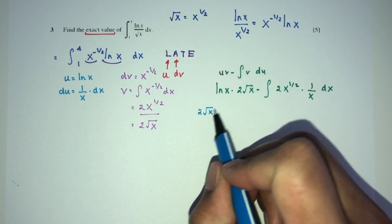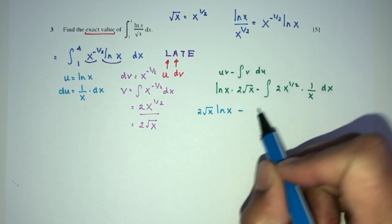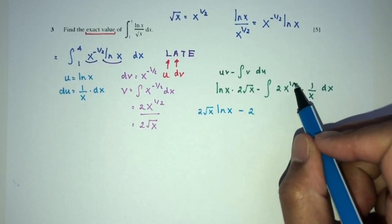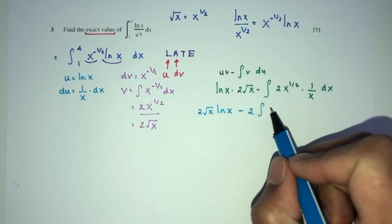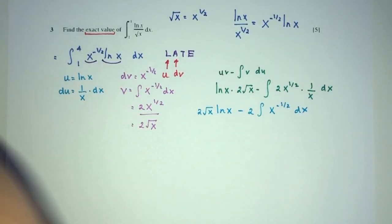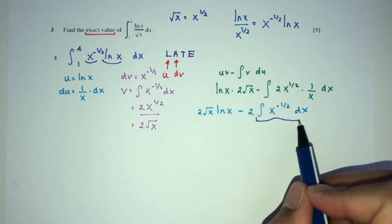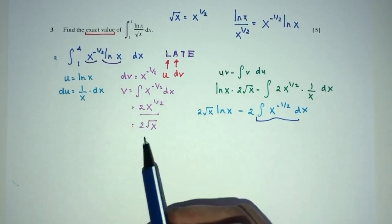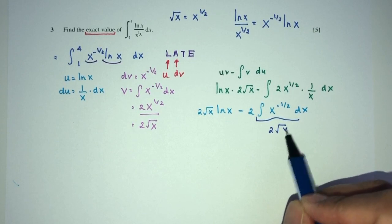You will have 2 here, root of x, ln of x. Minus 2 outside. x half divided by x should be x minus half dx. Now, we have seen this. This becomes 2 root of x.